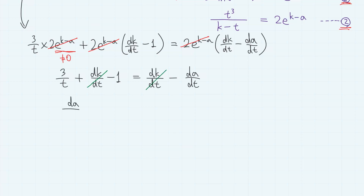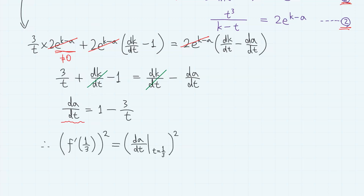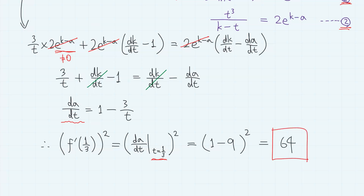After cancellation we have dA/dt equals 1 minus 3 over t. Setting t equals one-third gives 1 minus 9, which equals negative 8. Squaring this, f prime of one-third squared equals 64. And that is the answer.